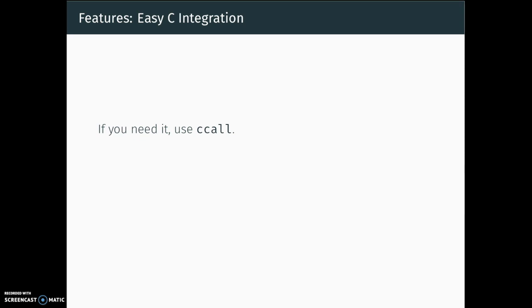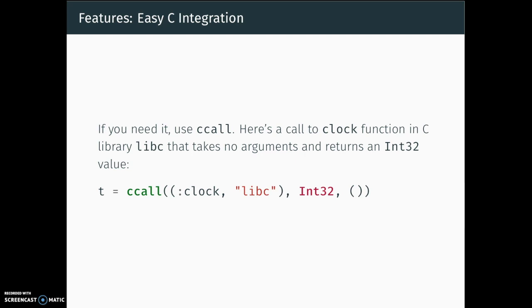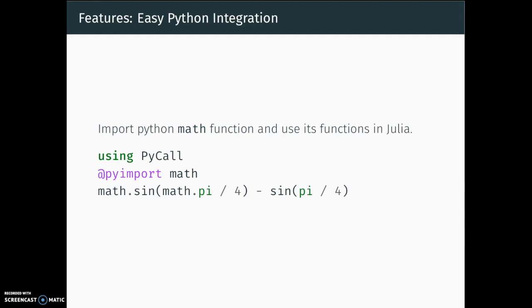If you have a C library and really need it, there are accommodations. A single line of code calls a C function: ccall specifying the function name and library, what type it returns — Int32 in this case — and any arguments. That's a C call in one line, no extra libraries needed. Similarly, with Python, if you have a Python library you really need, you just use PyCall — 'using PyCall; @pyimport math' — and you can then call Python's math functions. This comes out correctly, and that's essentially all there is to pulling in Python.